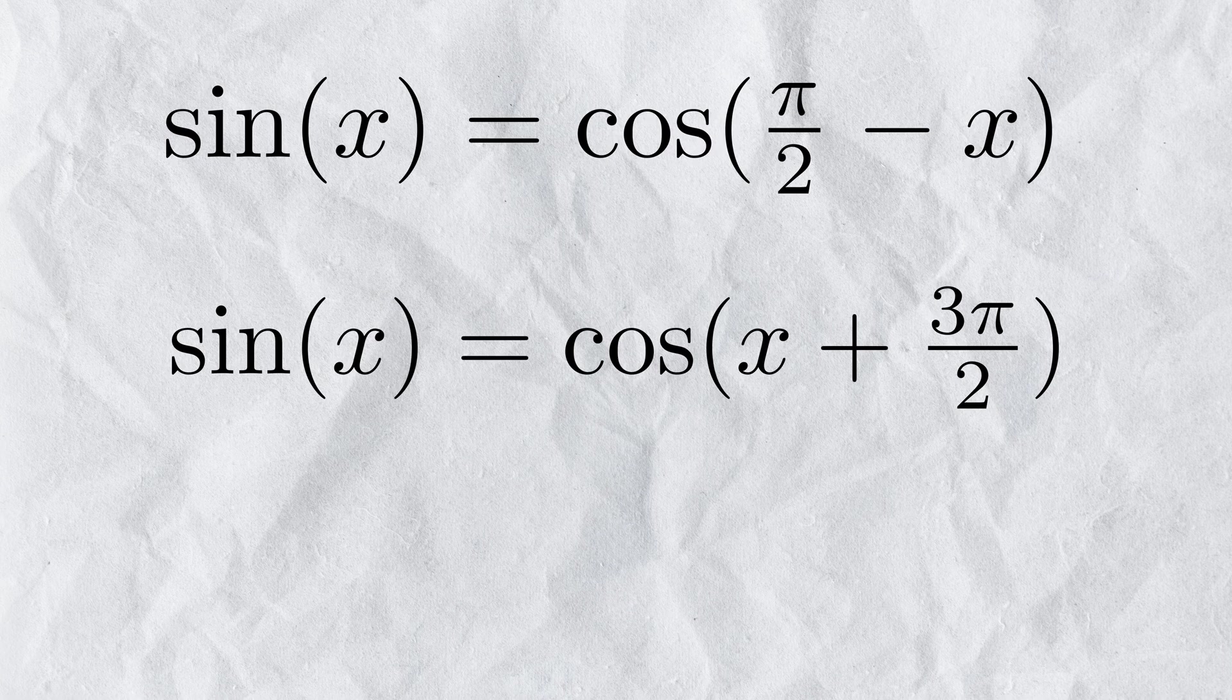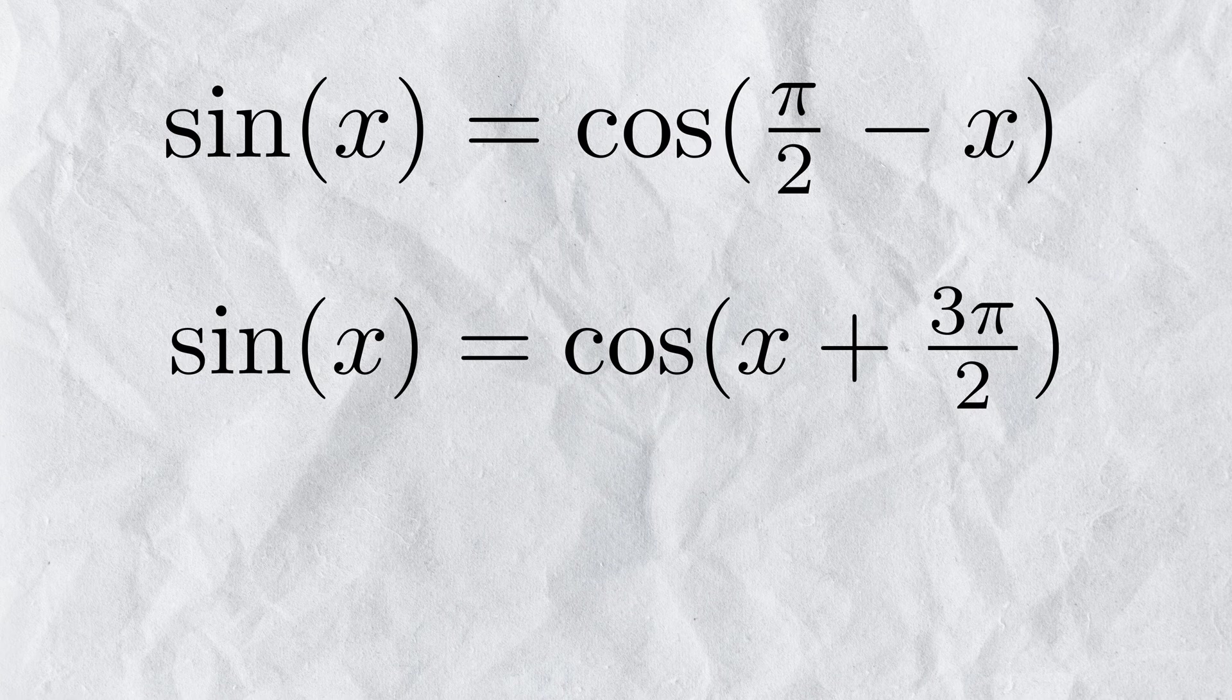Just to clarify for people who are only used to working with degrees, 2 pi radians is the same as 360 degrees.